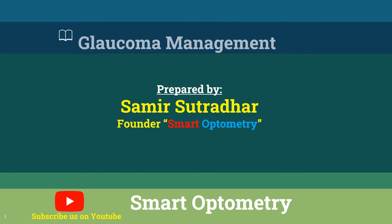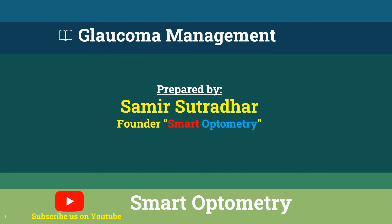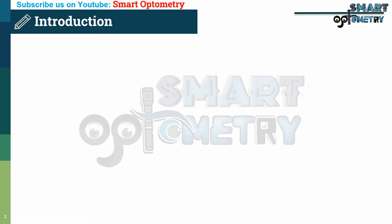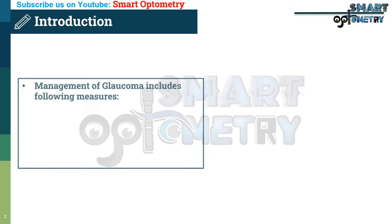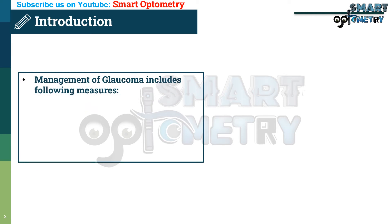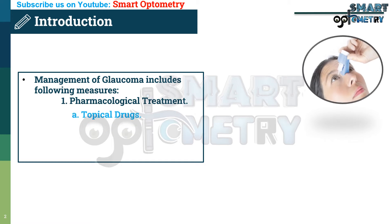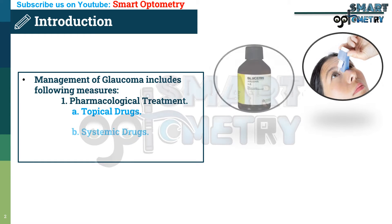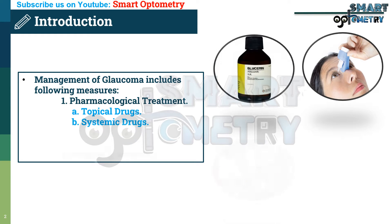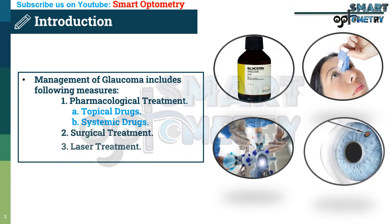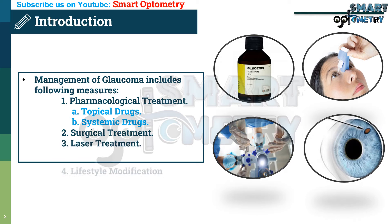Today I will discuss the management of glaucoma. Management of glaucoma includes the following measures: one, pharmacological treatment, which includes topical drugs and systemic drugs; two, surgical treatment; three, laser treatment; and four, lifestyle modification.